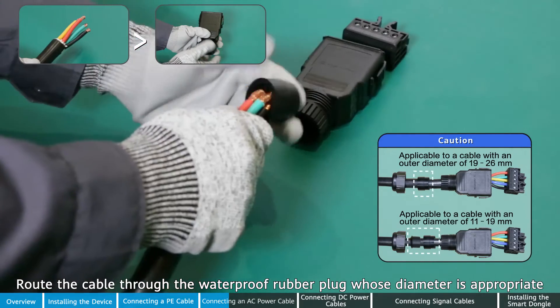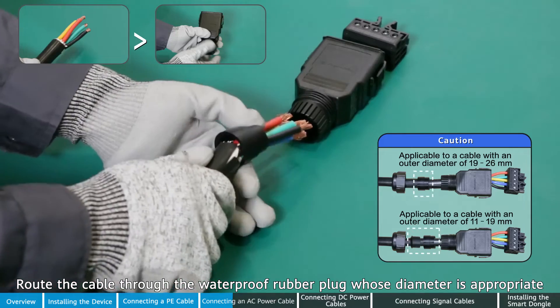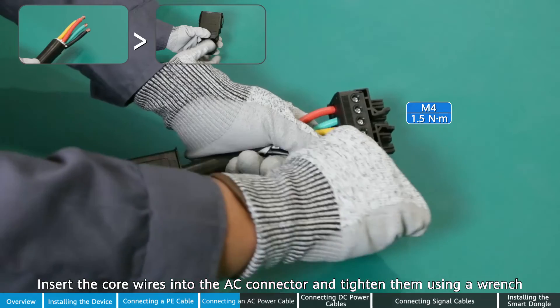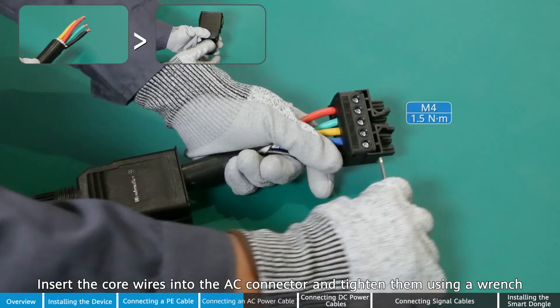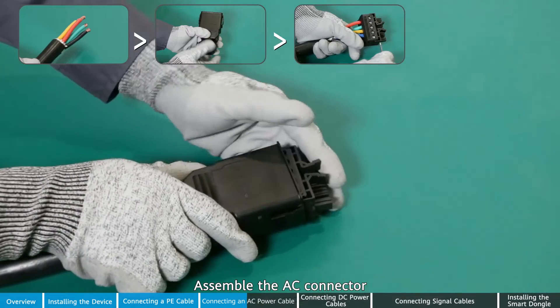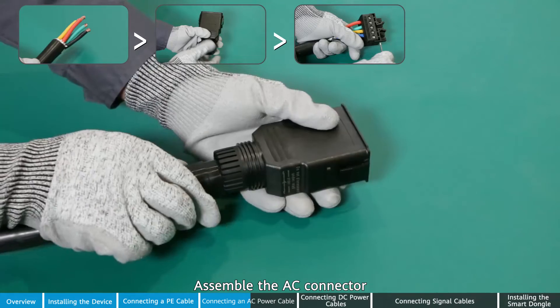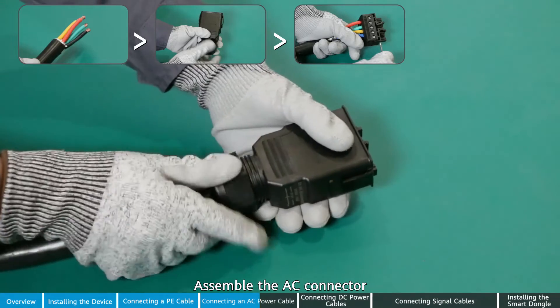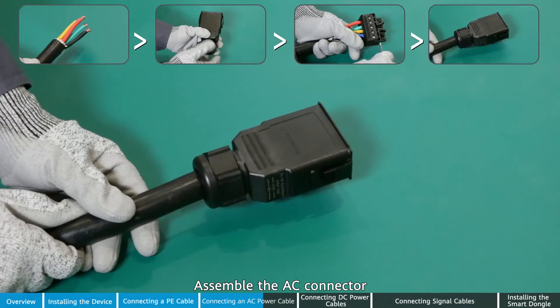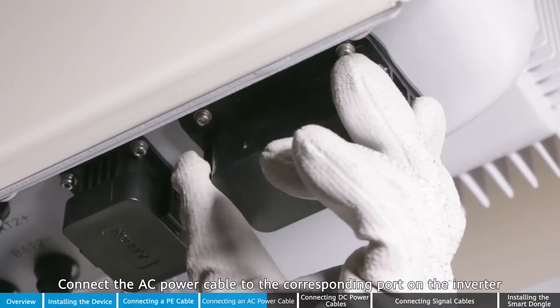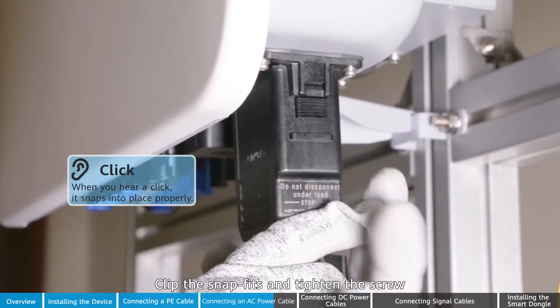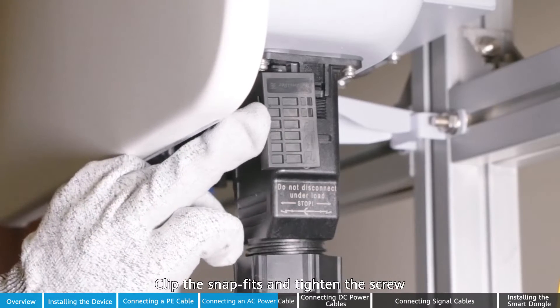Route the cables through the waterproof rubber block whose diameter is appropriate. Insert the core wires into the AC connector and tighten them using a wrench. Connect the AC power cable to the corresponding port on the inverter. Clip the snap fit and tighten the screw.